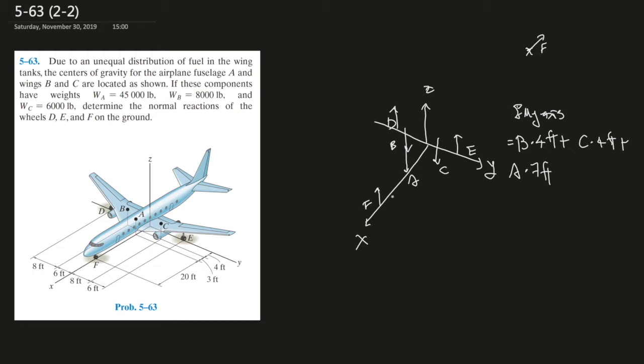So the force of B times 4 feet plus the force of C times 4 feet, plus the force of A times, this is how many forces over here, that's 7, so it will be 7 feet over here, and the last force is F. D and E are cancelled because they are on the axis, and this is minus force at F times, well, there's 20 plus 3 plus 4, that would be 27 feet.